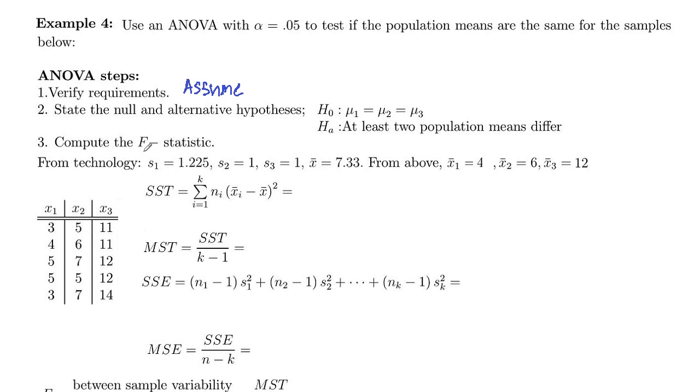So first we'll compute our F statistic. I entered this data into the TI calculator, got a sample standard deviation in the first five data values of 1.225, 1 in the second set of data values, and 1 in the third set of data values. The mean for all 15 values is 7.33, and then from above we had previously calculated these means of 4, 6, and 12 for set X1, X2, and X3.